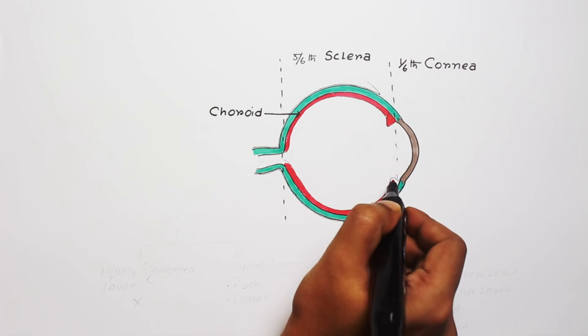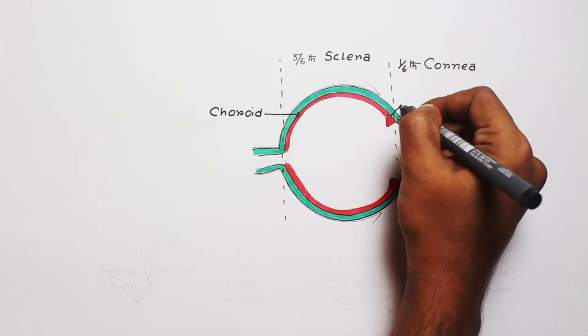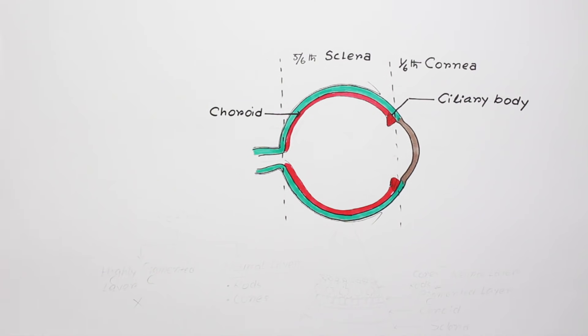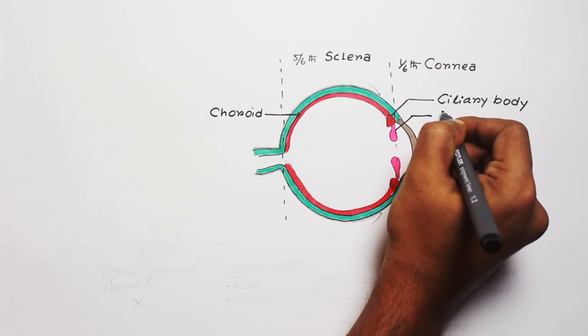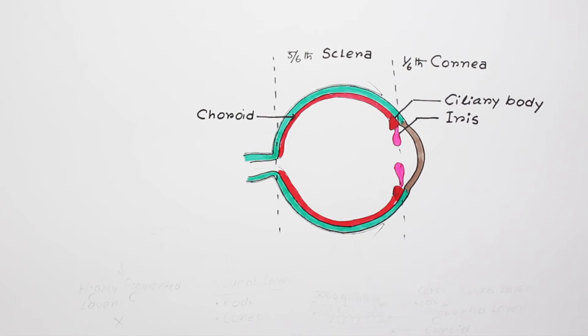Now the anterior portion of this vascular layer becomes thickened. This thickened part is called the ciliary body. And just in the middle of the ciliary body, there is a vascular diaphragm.